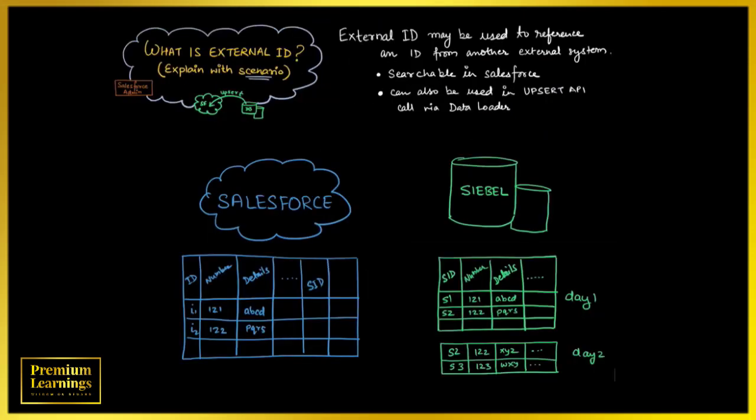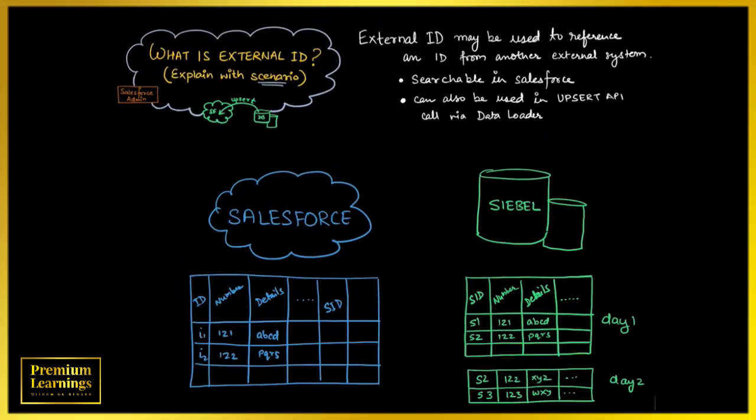External ID may be used to reference an ID from another external system. What does that mean? If data is coming from a third-party system to Salesforce, we can use a text field called External ID to store the unique ID of the third-party system in Salesforce.